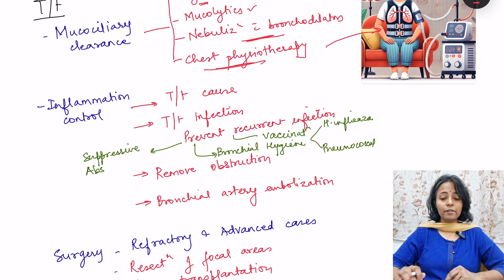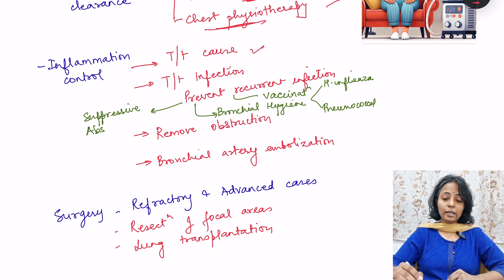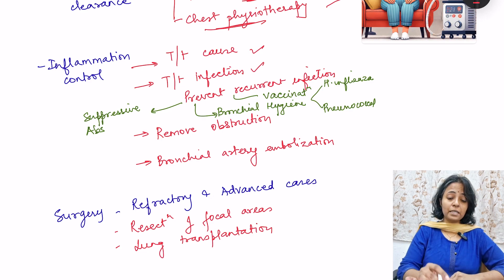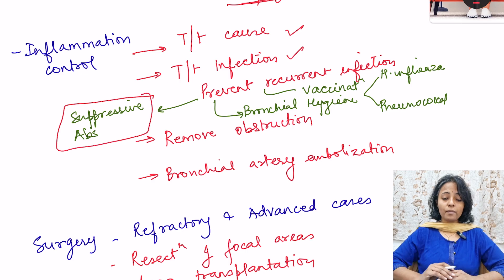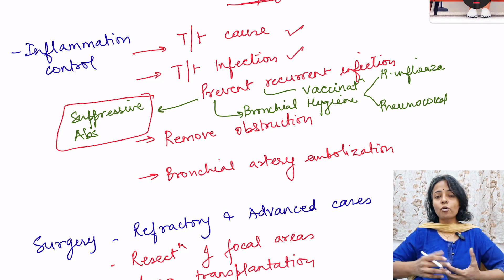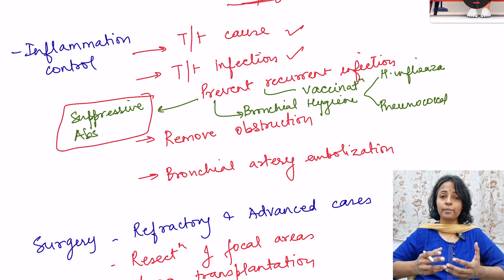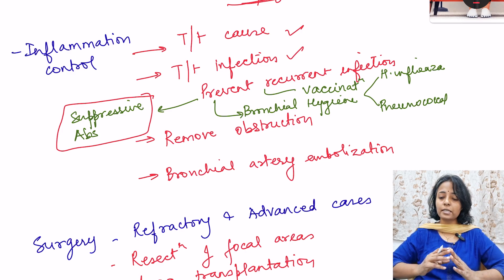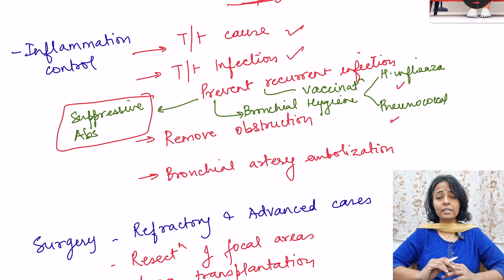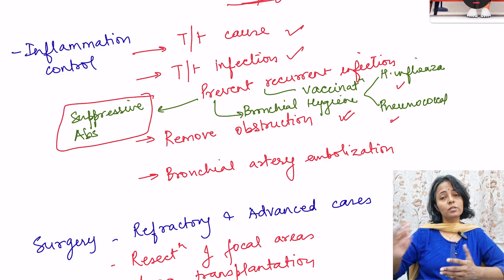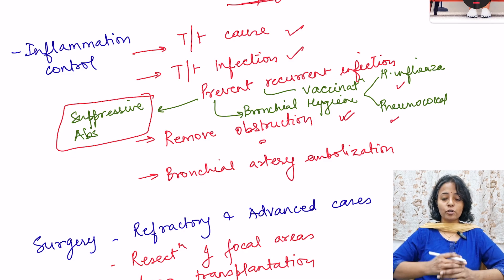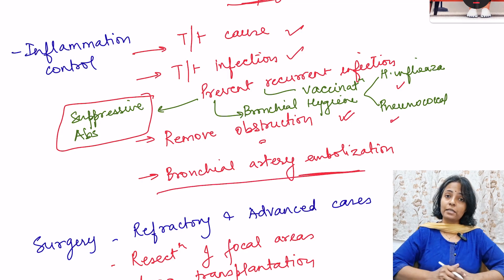The second component is control of infection and inflammation. We treat the cause and the infection. If a person is getting repeated infections, suppressive antibiotics may be used, though we must weigh risks and benefits because long-term suppressive antibiotics can cause antibiotic resistance. Vaccination against H. influenzae and pneumococcal vaccine should be given. Maintaining bronchial hygiene through mucus clearance also prevents recurrent infection. Any obstruction should be removed. For life-threatening hemoptysis, bronchial artery embolization is required.